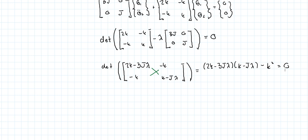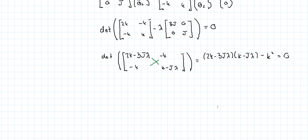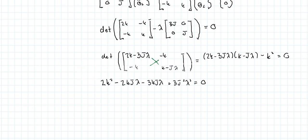Expanding, we get 2K² - 2KJλ - 3KJλ + 3J²λ², and checking that this is correct. So we have: 3J²λ² - 5KJλ + 2K² - K² equals zero.